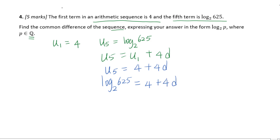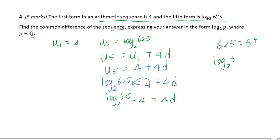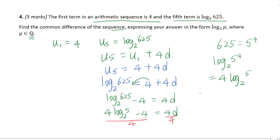I'm looking for d. This is a linear equation, so subtracting 4 from both sides gives log base 2 of 625 minus 4 equals 4d. Since 625 equals 5 to the fourth power, log base 2 of 625 equals 4 log base 2 of 5. So 4 log base 2 of 5 minus 4 equals 4d. Dividing both sides by 4, we get log base 2 of 5 minus 1 equals d.